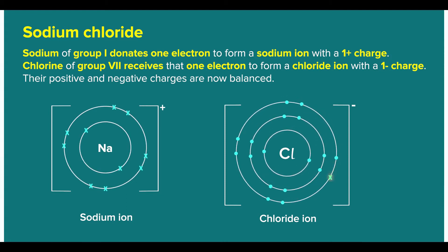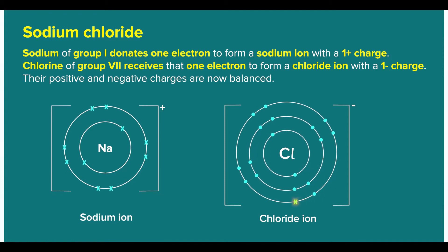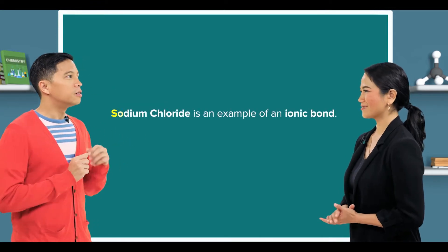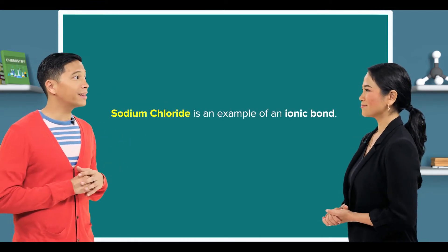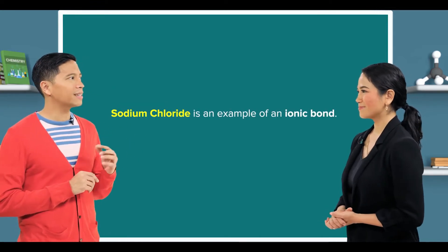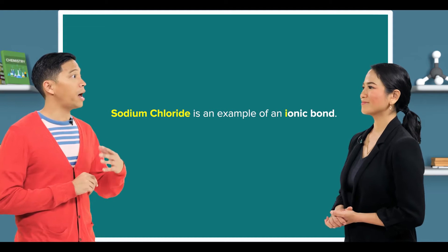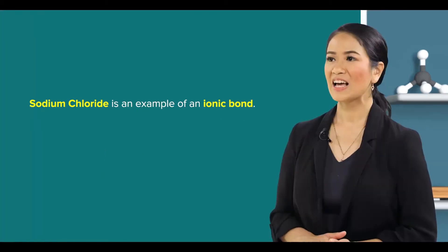Let's take a look at the dot and cross diagram. I remember — sodium chloride is the easiest example of an ionic bond.